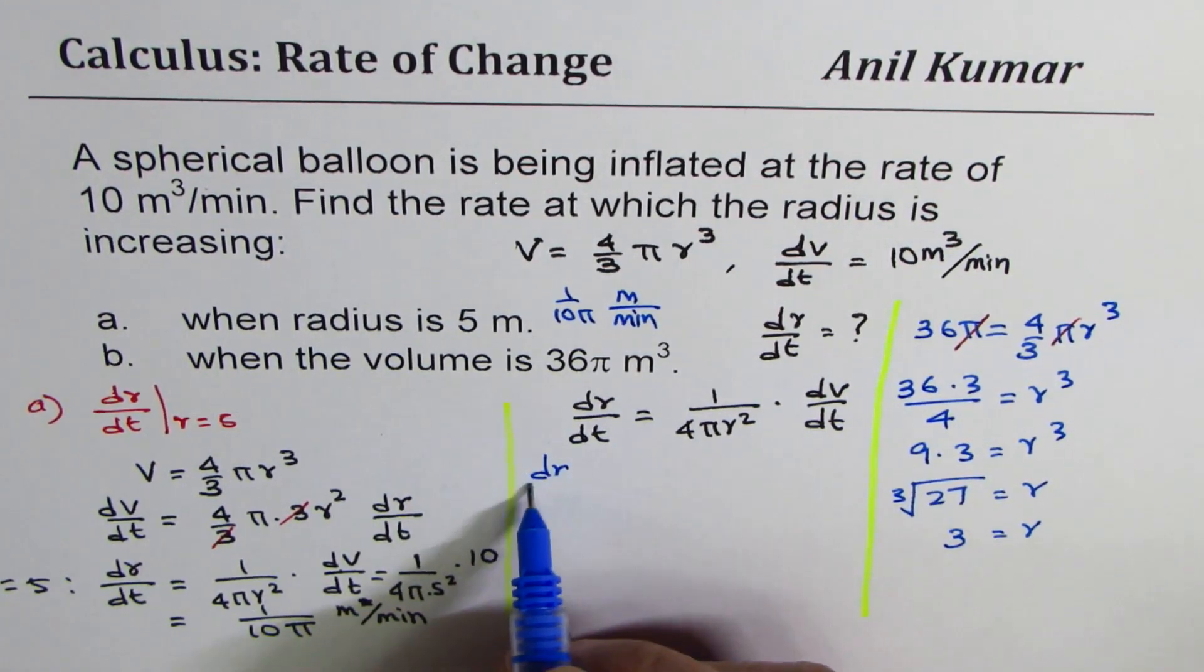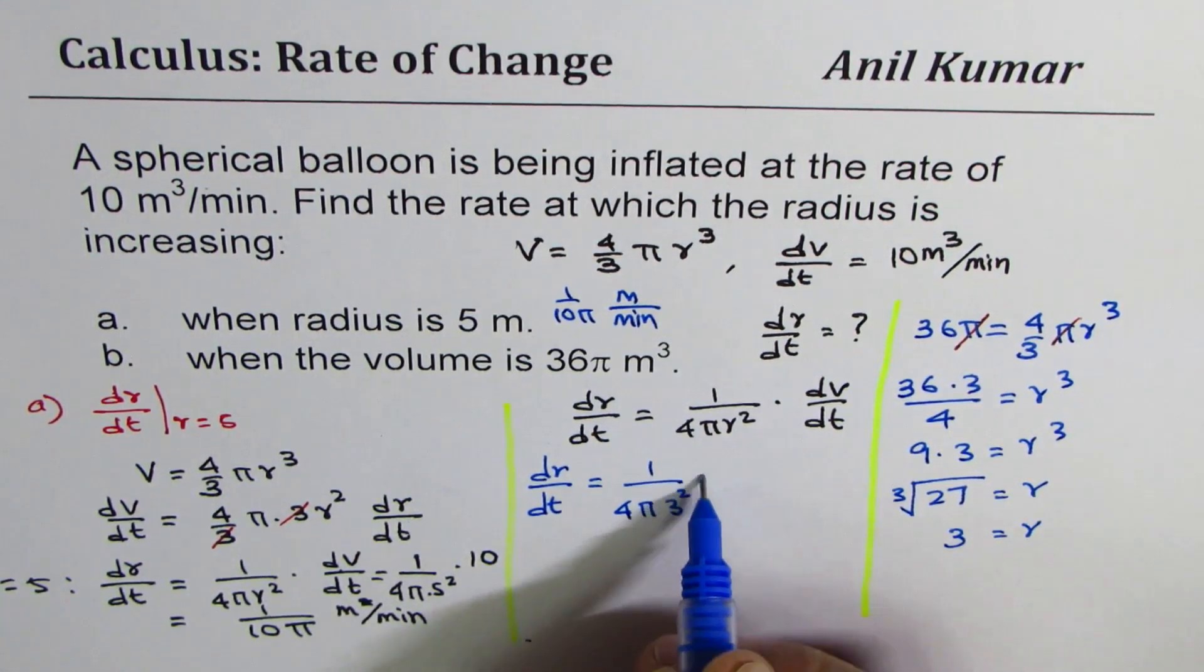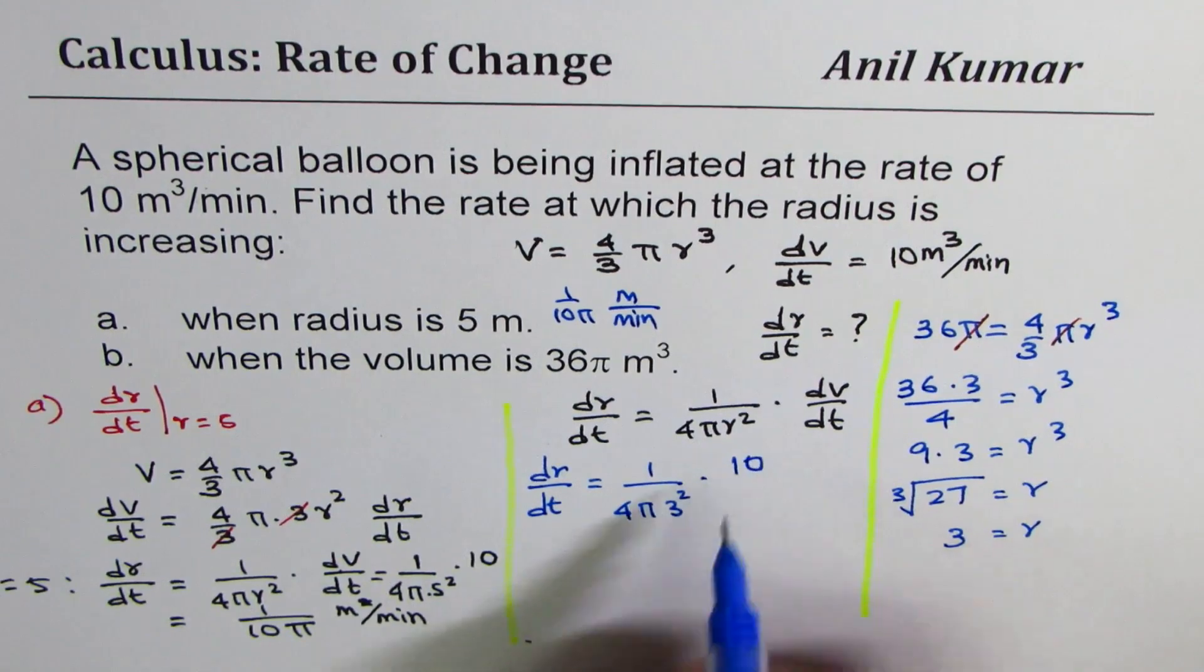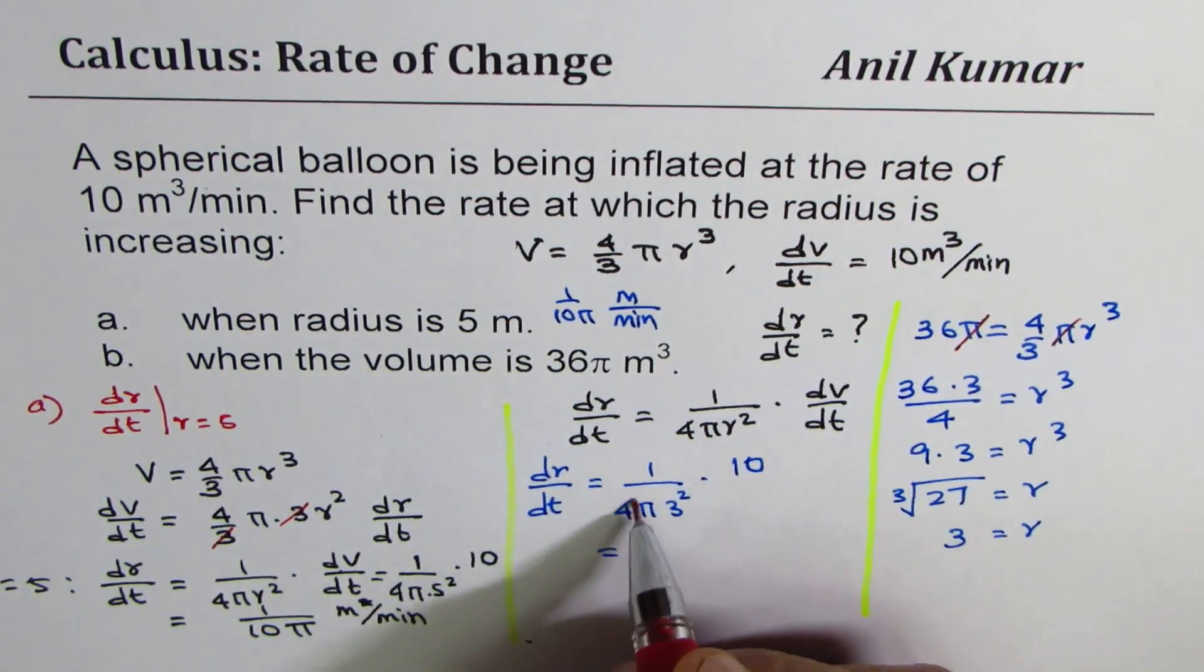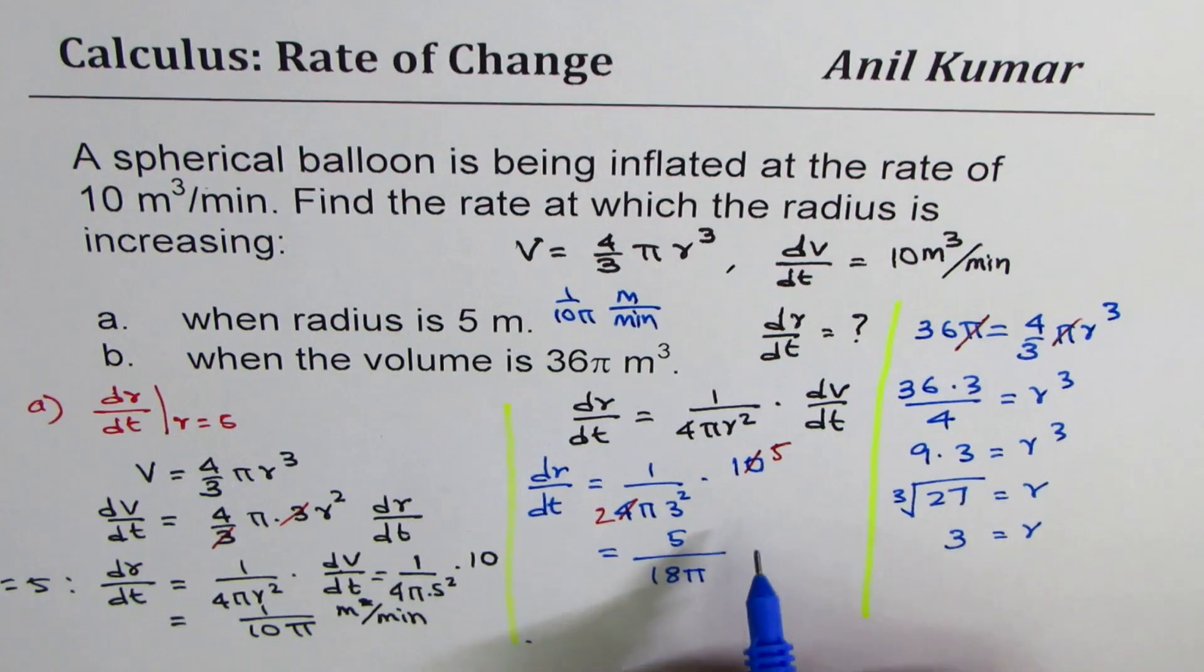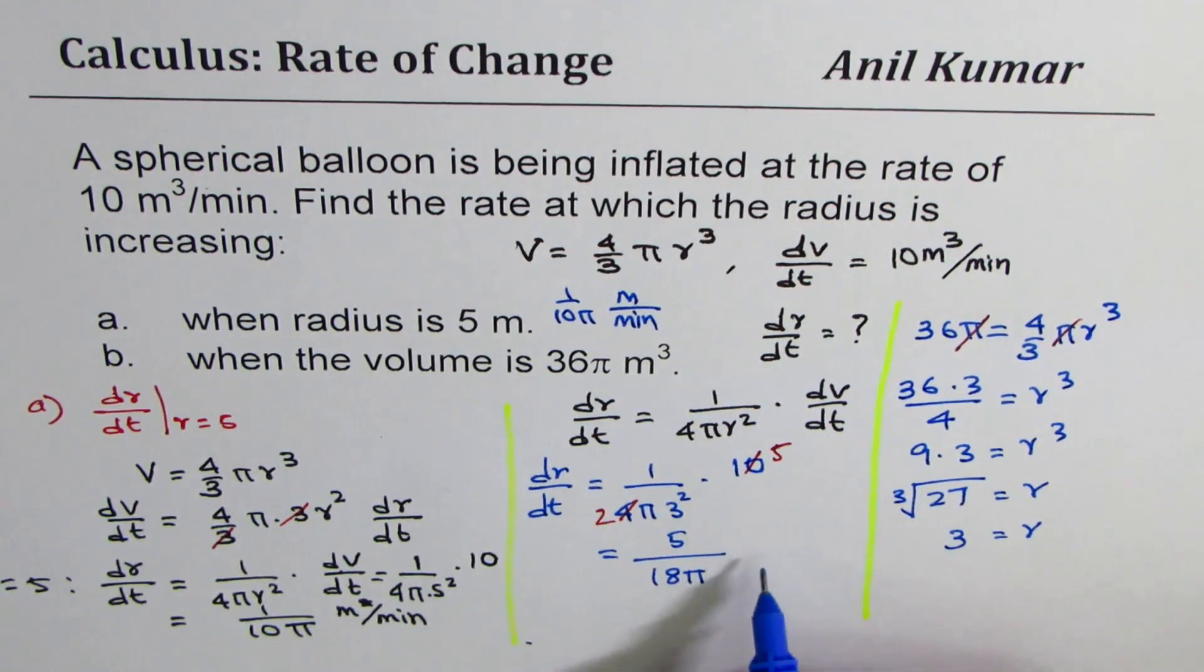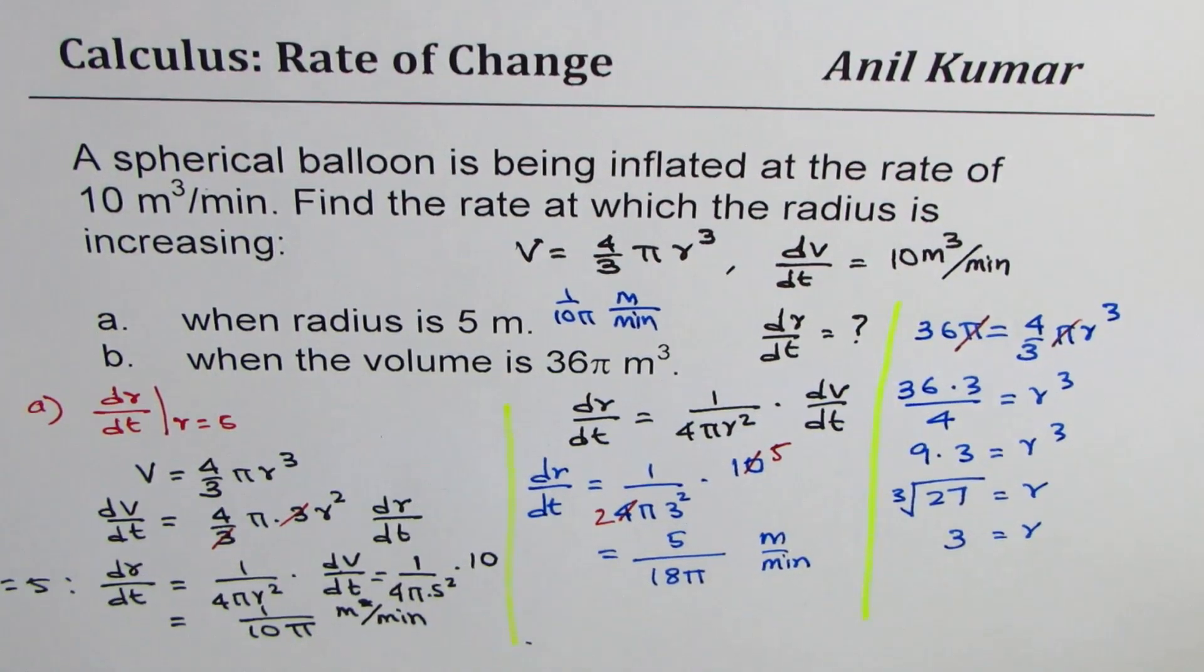So we get dr dt equals to 1 over 4 pi 3 square times dv dt is given to us as 10. So you can cancel 4 and 10, 5 times and 2 times. So we get 5 over 9 times 2 is 18, 18 pi and the units are meters per minute. So that becomes your result.